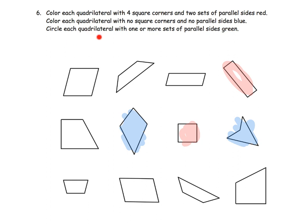Color each quadrilateral with one or more sets of parallel sides green. These shapes have the top and the bottom parallel, and the left and the right parallel. This shape has the left and the right parallel. This one has a couple of sides parallel, and this has a couple of sides parallel. Now this one only has one set of parallel sides. This also only has one set of parallel sides.